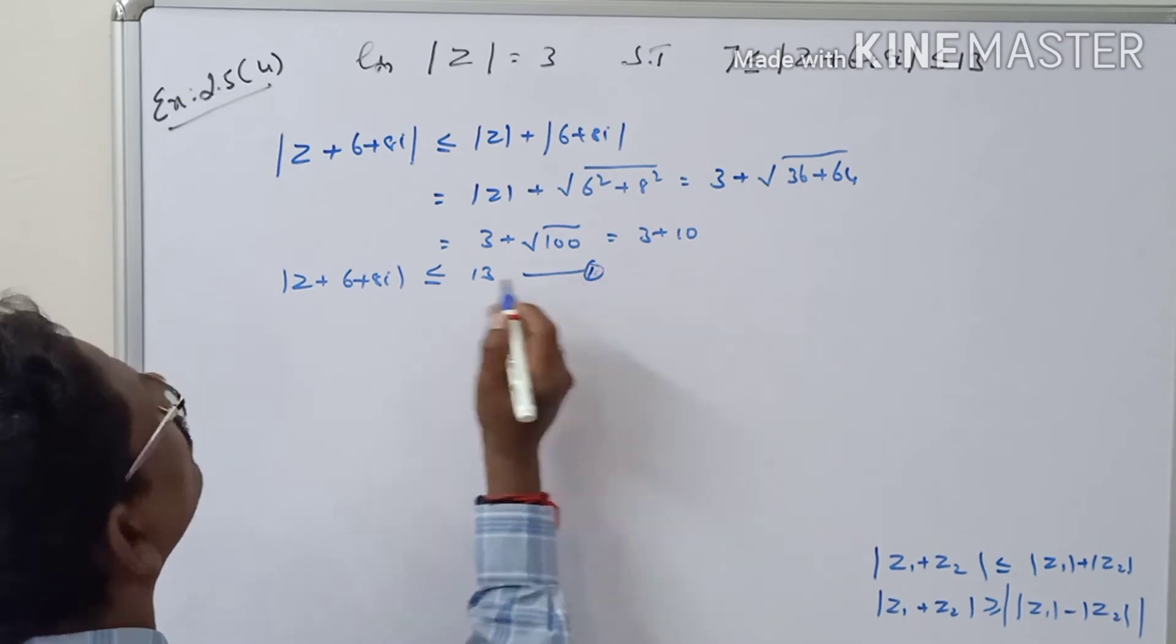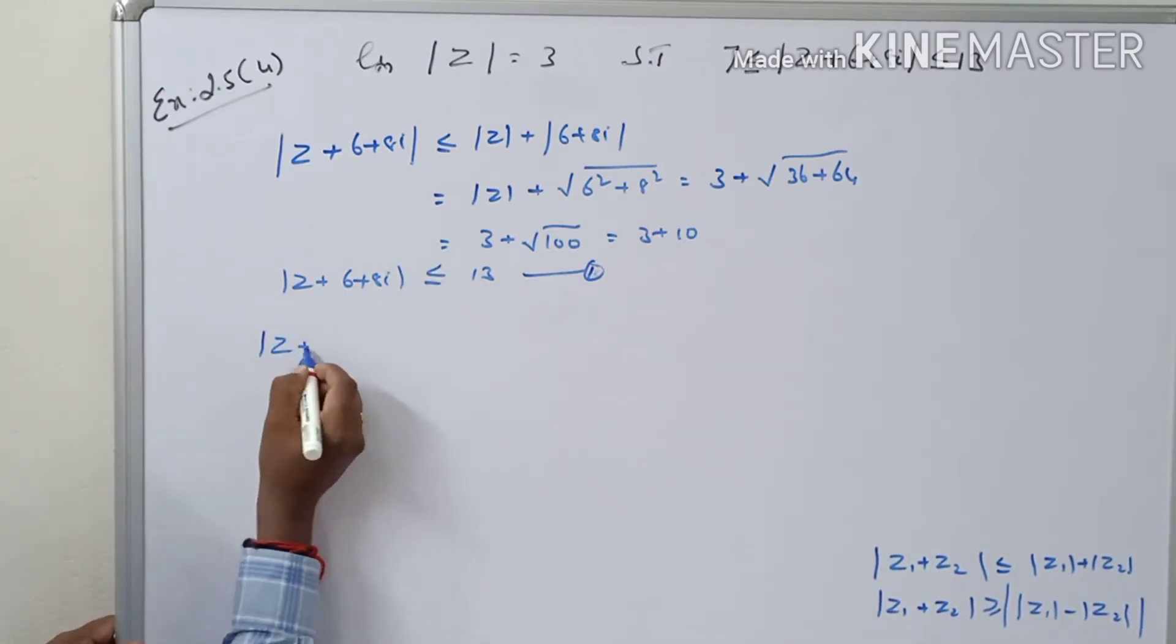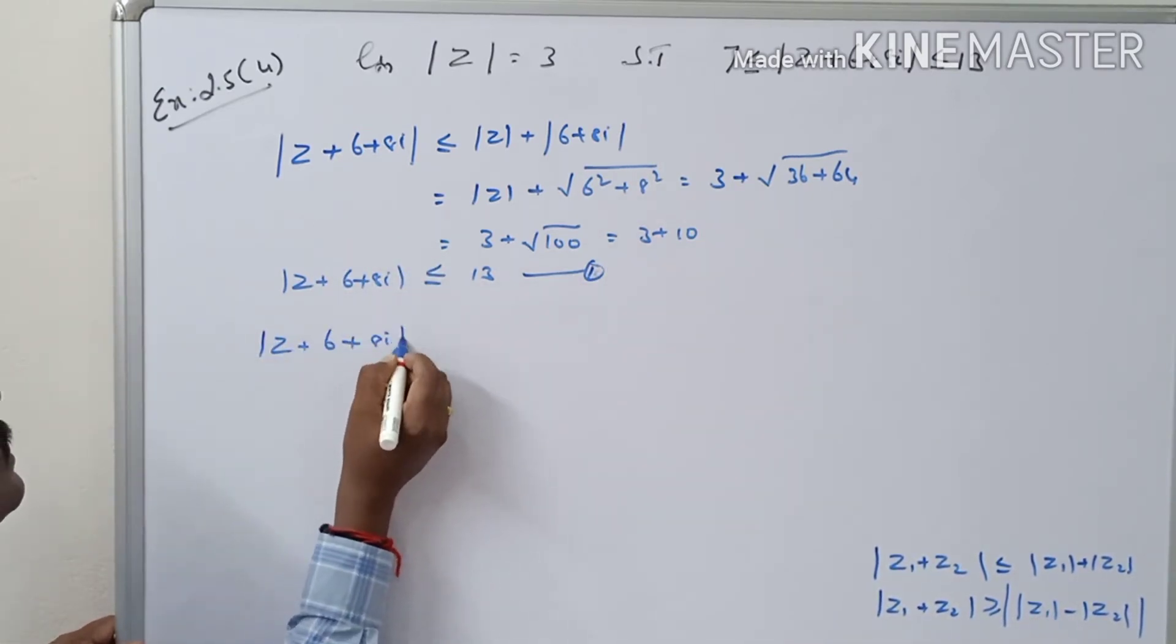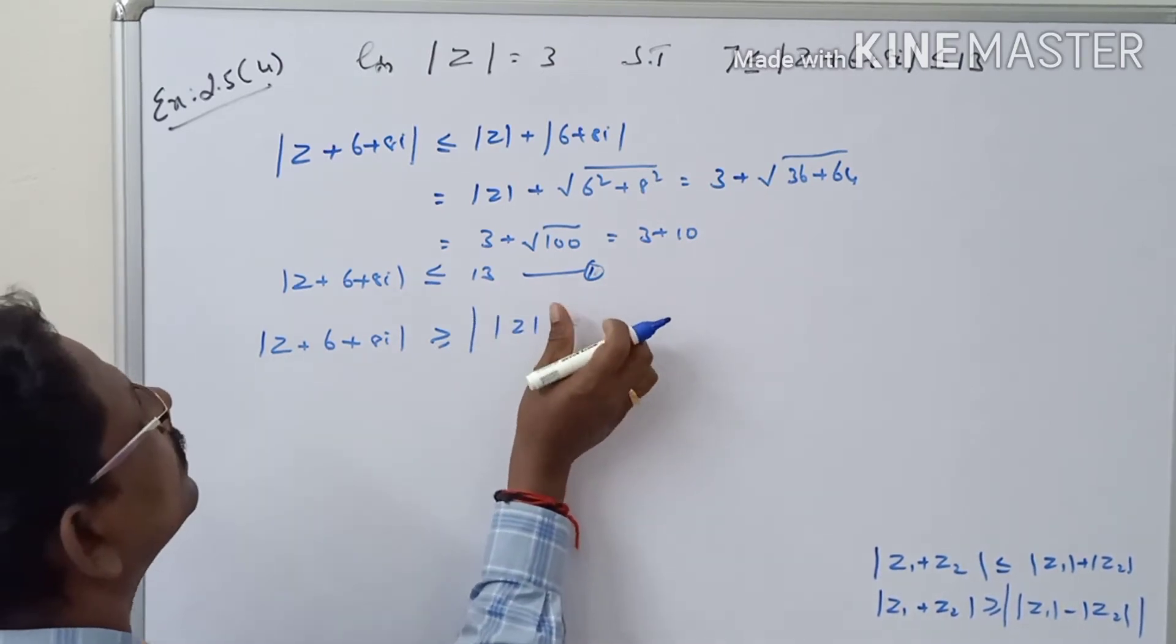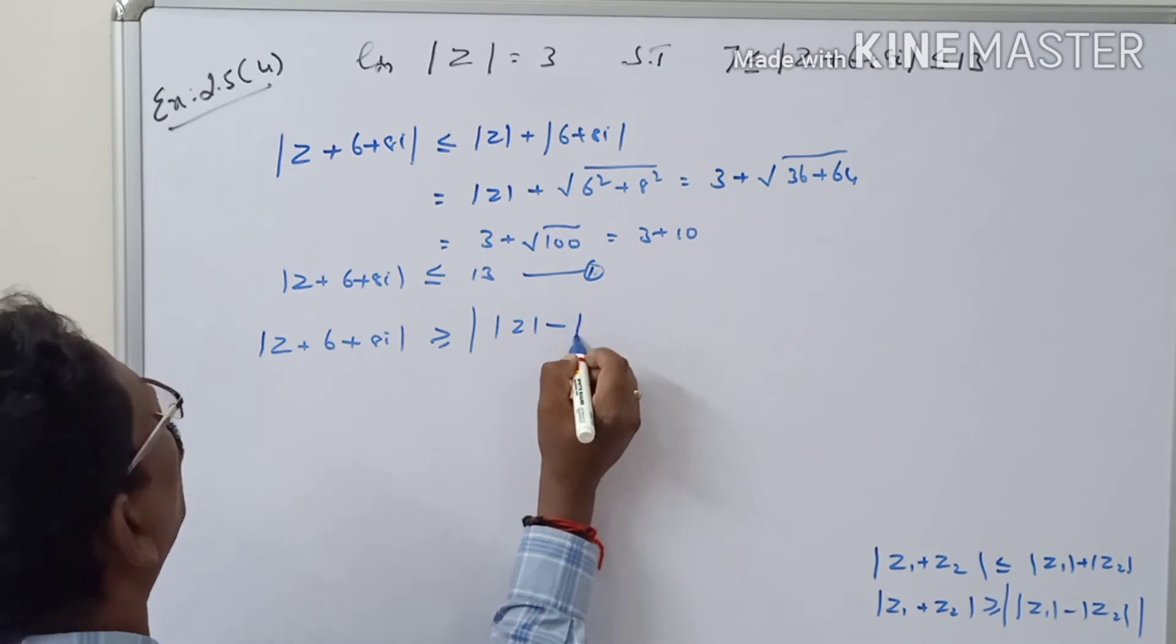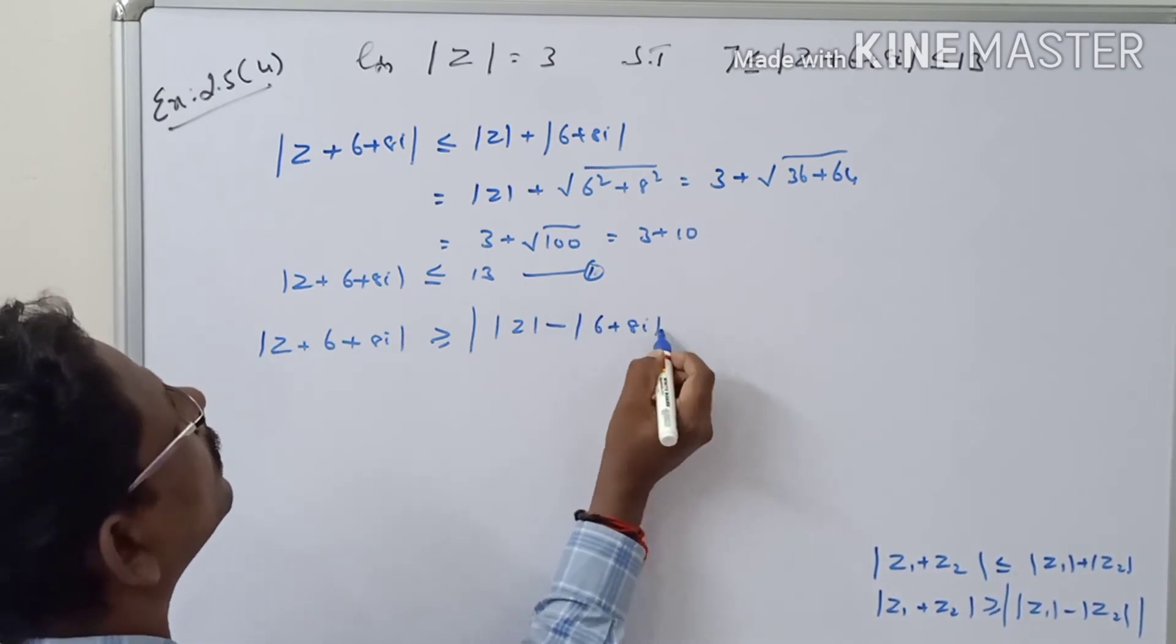Now similarly, |z + 6 + 8i| ≥ ||z| - |6 + 8i||.